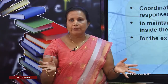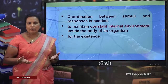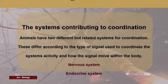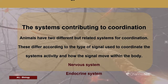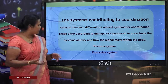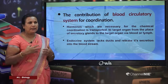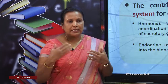There are two types of signals involving communication within the body. Animals have two different but related systems for coordination. They differ according to the type of signal used and how the signals move within the body. The nervous system uses electrical signals mainly, and the endocrine system uses chemical signals.